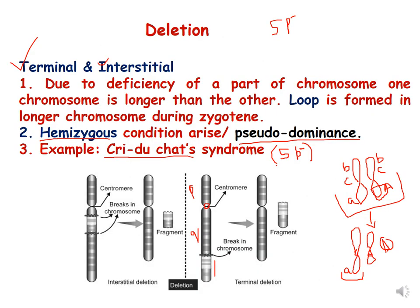Now let us focus on deletion. Deletion is of two kinds: terminal deletion and interstitial deletion. It happens due to deficiency of a part of chromosome. Because of this, one chromosome is longer than the other, and to enable the two chromosomes to form a bivalent during the zygotene stage, a loop is formed in the longer chromosome.